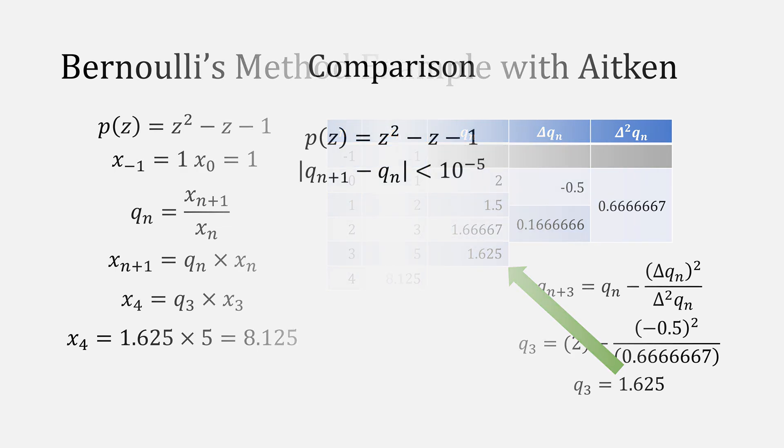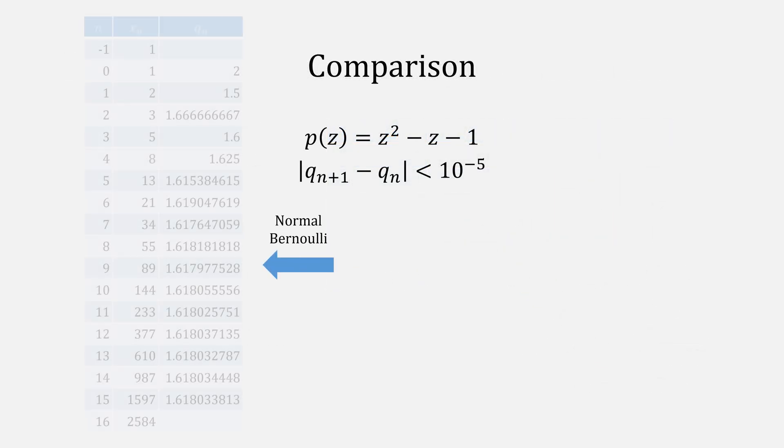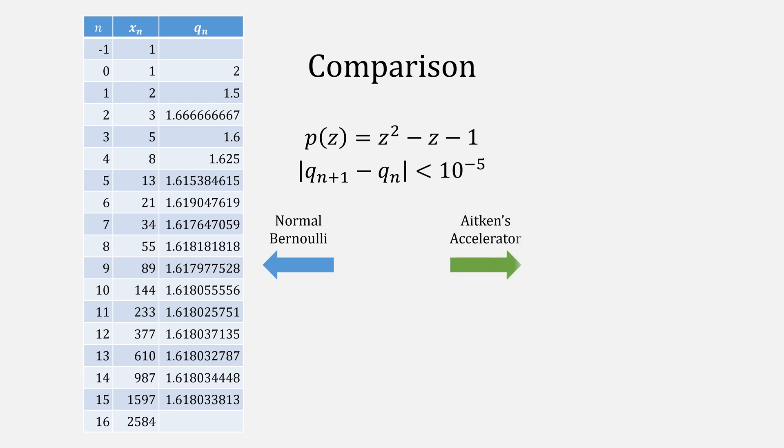To do a side-by-side comparison between normal Bernoulli's method and Aitken's accelerated version, this saves us seven iterations on the method.